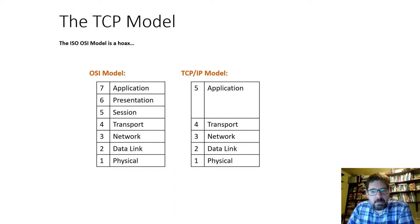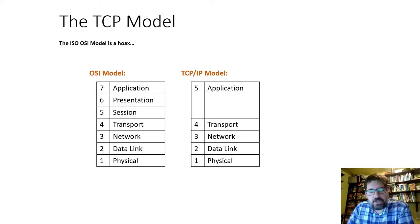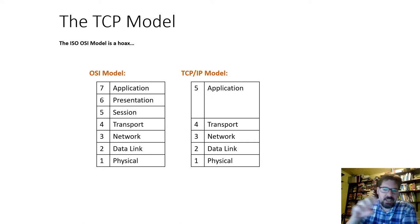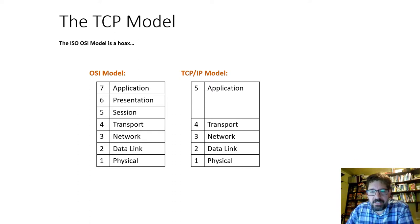A lot of textbooks and instructors will talk about TCP/IP as being sort of a derivative of OSI. I would argue that it's not a derivative — it's a completely different standard altogether. A lot of times I'll hear people say TCP/IP only has five layers instead of seven, and that layer five really encompasses layers seven, six, and five of the OSI model. That's really not true.